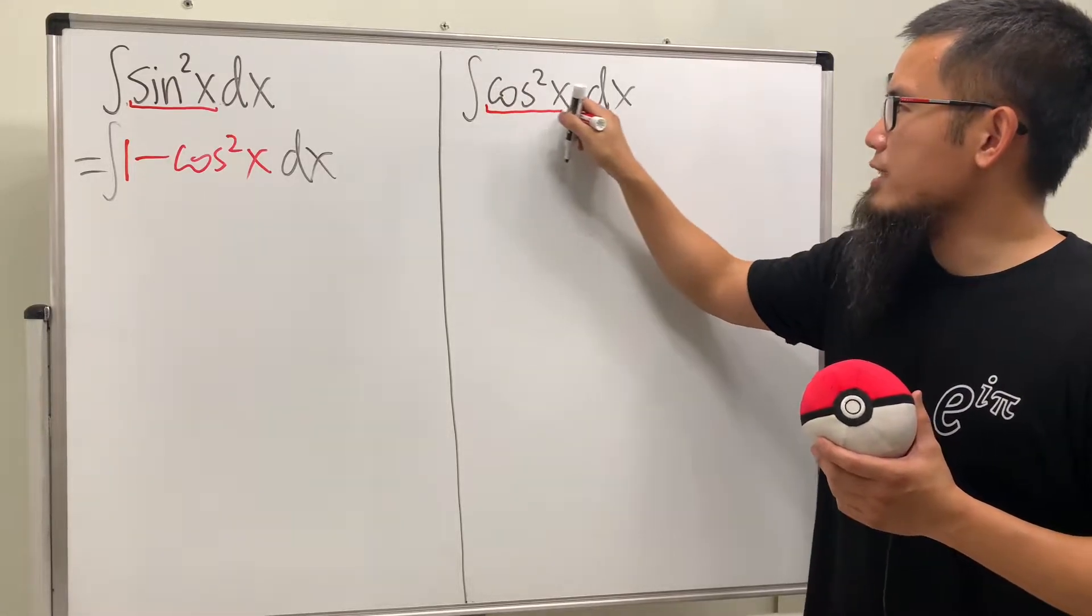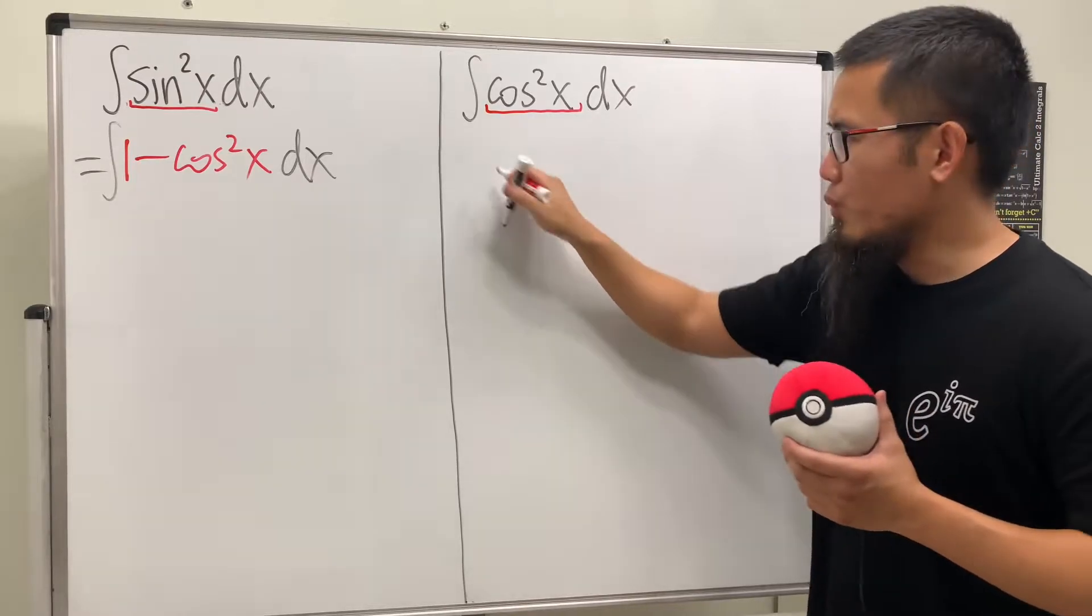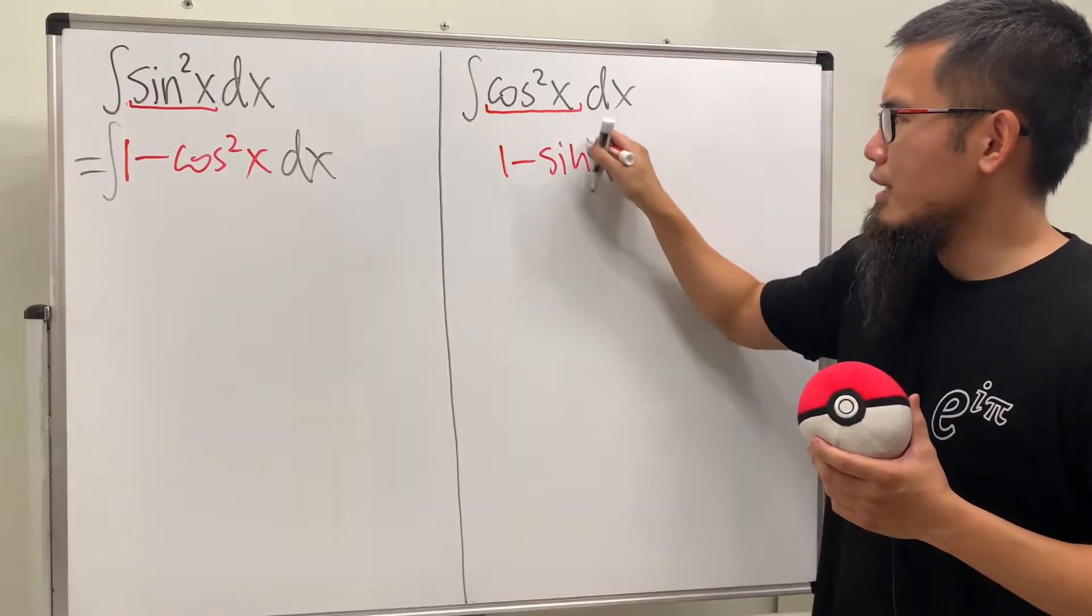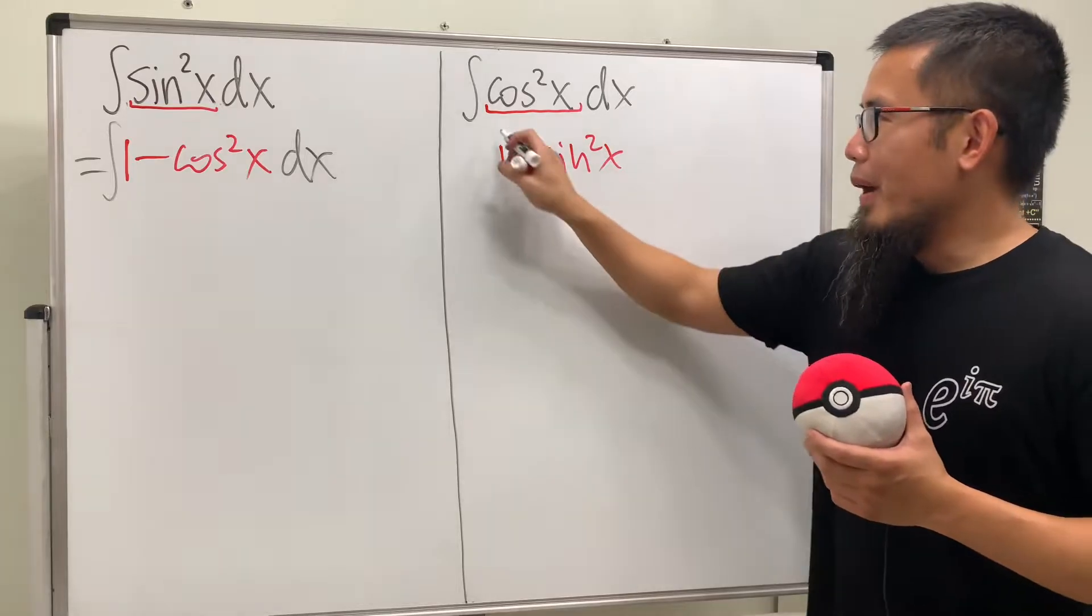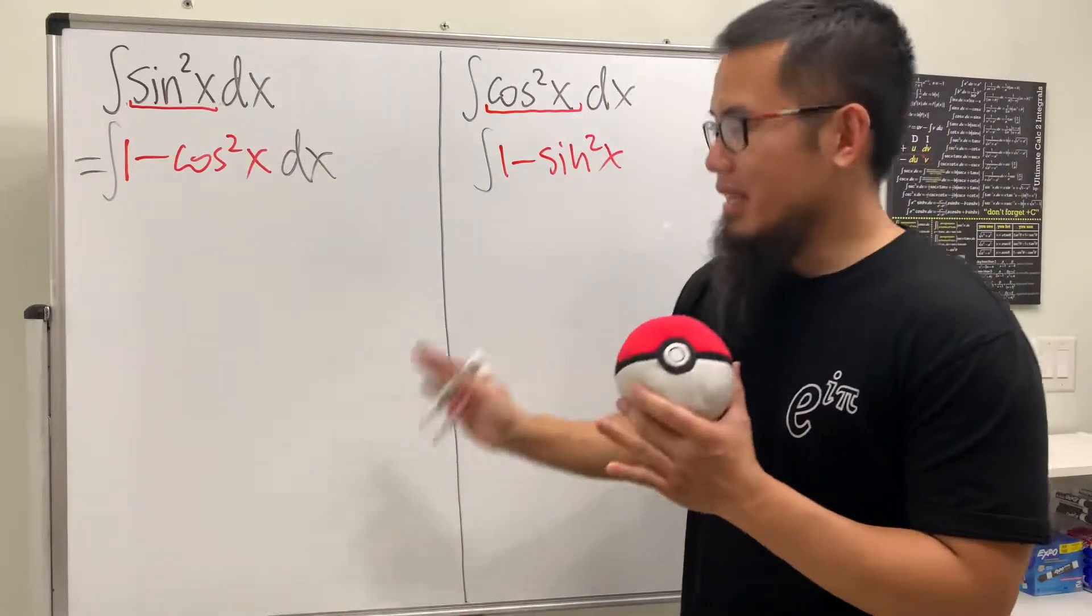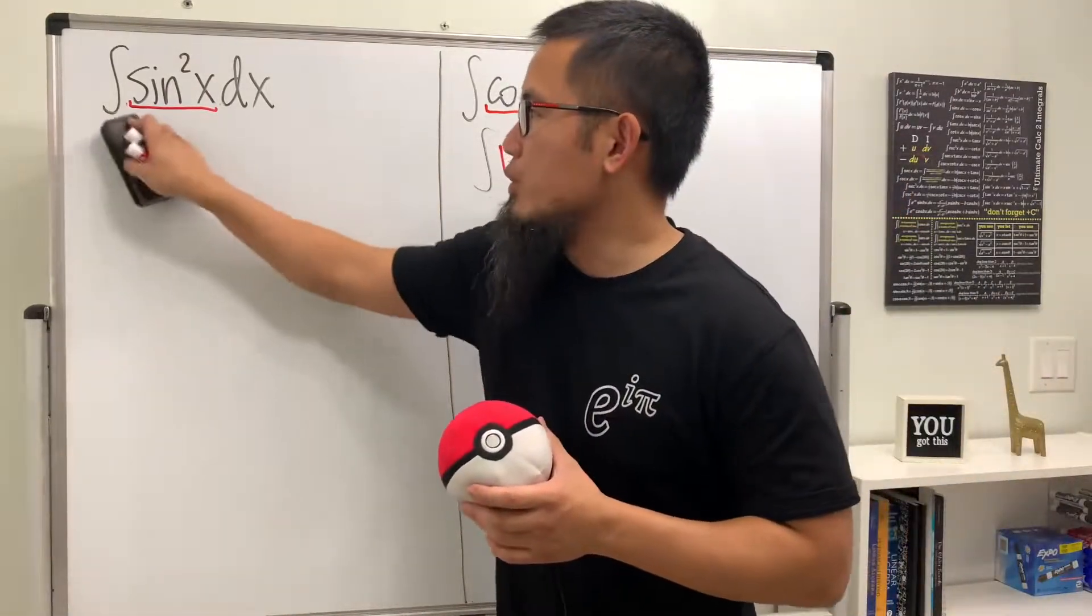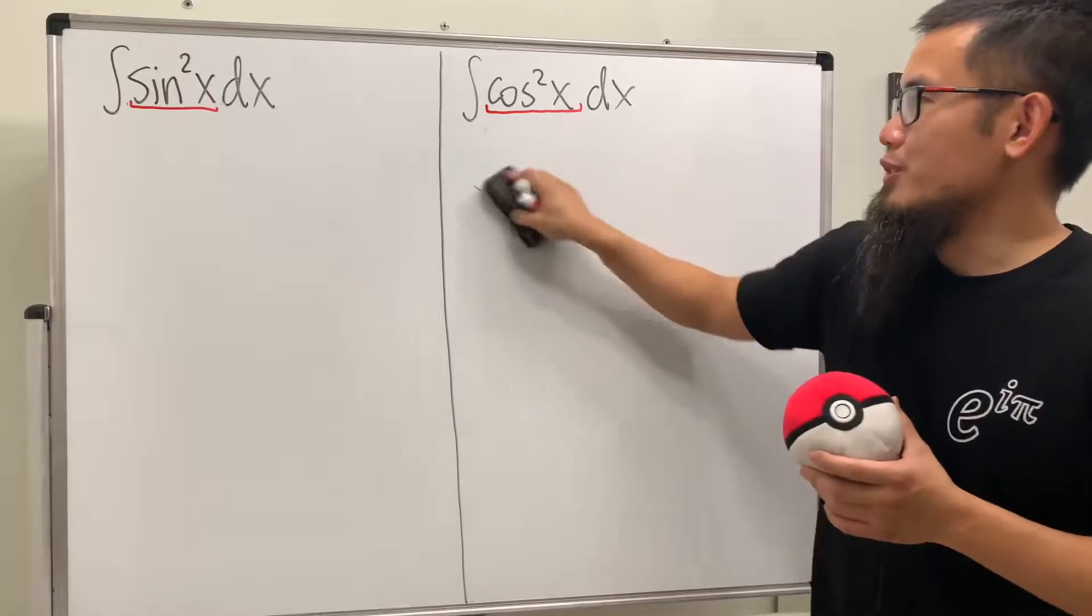All right, then, if we look at cosine squared x, then what identity can we use? 1 minus sine squared x. Oh my god. We will just go back to the first one, right? So you see, this is actually not the identity that we want to use. Because we'll just go back and forth.